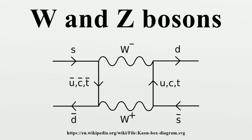Decay. The W and Z bosons decay to fermion-antifermion pairs, but neither the W nor the Z bosons can decay into the higher-mass top quark. Neglecting phase-space effects and higher-order corrections, simple estimates of their branching fractions can be calculated from the coupling constants.